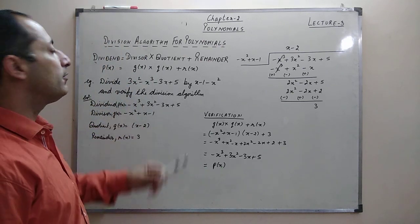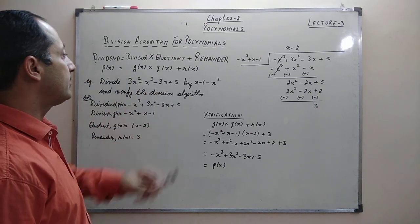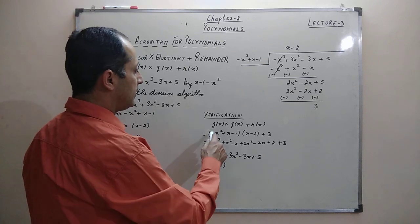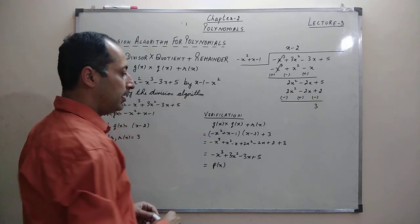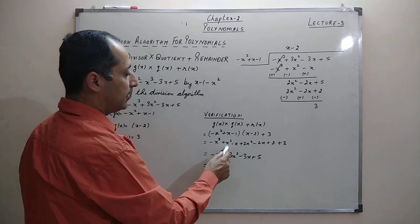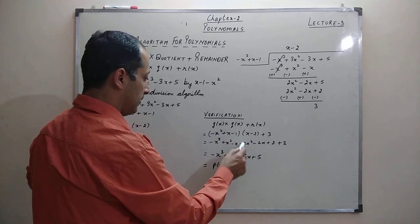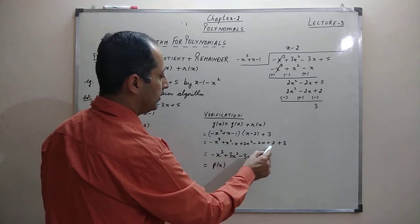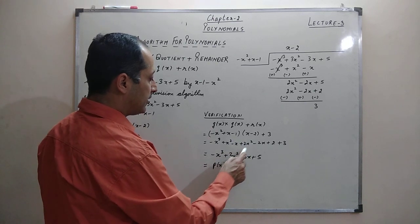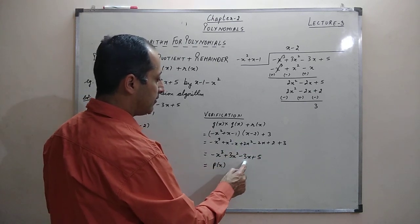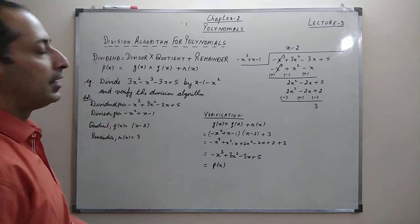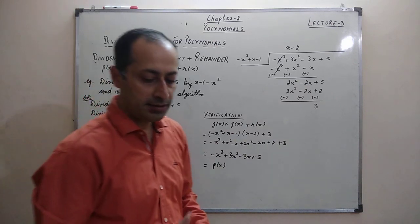Now we verify the division algorithm. Taking the right side: g(x)·q(x) + r(x) = (-x² + x - 1)(x - 2) + 3. Multiplying: x·(-x² + x - 1) gives -x³ + x² - x, and (-2)·(-x² + x - 1) gives +2x² - 2x + 2. Adding +3: we get -x³ + 3x² - 3x + 5, which is exactly our dividend. So the division algorithm is verified.